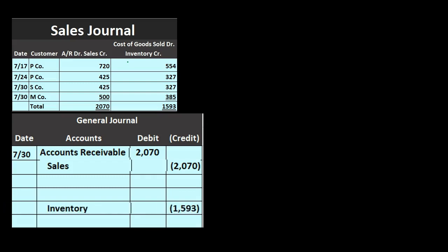The second component is a debit to cost of goods sold and a credit to inventory. I typically think of inventory first because it's something tangible — I can visually imagine it going down. Since inventory is a debit balance account, we make it go down by doing the opposite: a credit. Then we debit cost of goods sold. It's an expense, and expenses only go up in the debit direction, which increases the expense and makes net income go down.